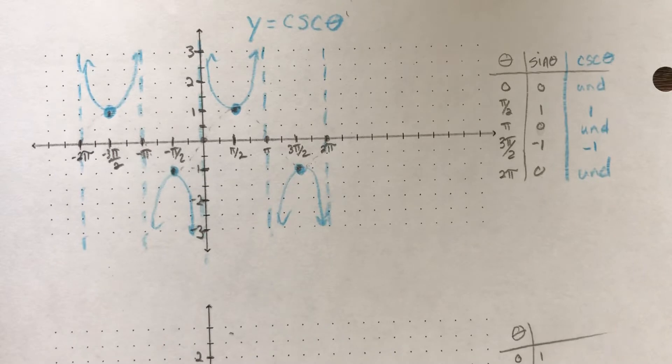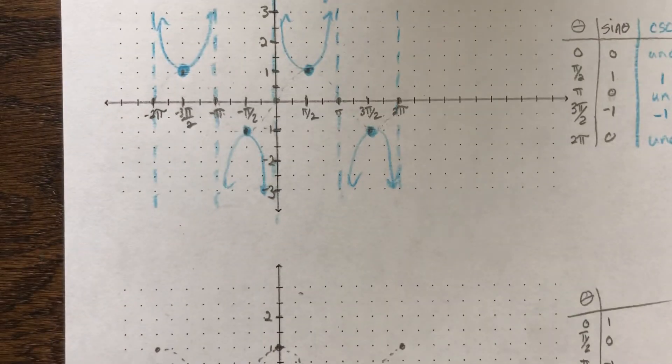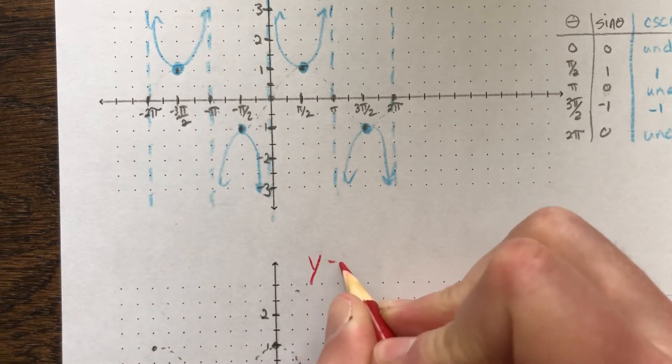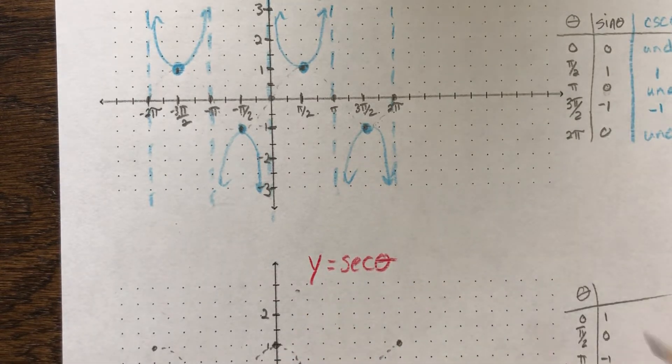The sine, I'm sorry, the secant is going to look very much the same, okay? Because we're going to take a look at the inverse of, or I'm sorry, the reciprocal, sound like you guys, the reciprocal of the cosine, right?